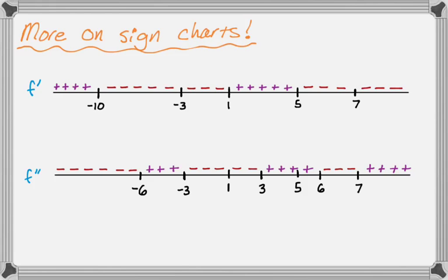So anywhere f prime goes from positive to negative, f would have a maximum. Everywhere f prime goes from negative to positive, f would have a minimum. So we can do our little arrows here, which are helpful. So you can see a maximum, minimum, a maximum. And there's nothing else, because it just goes decreasing, decreasing.